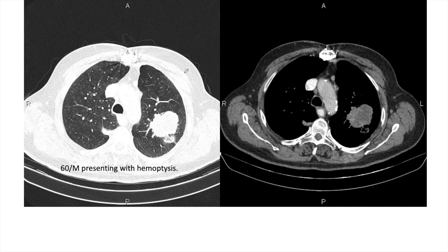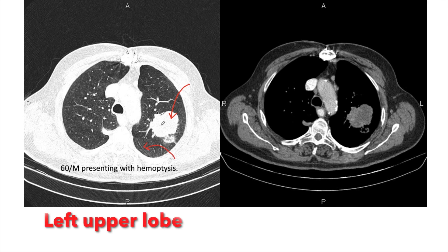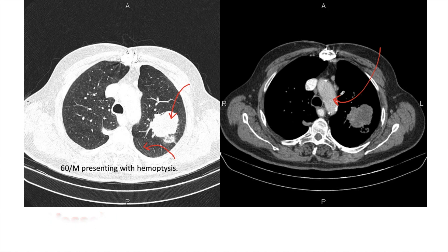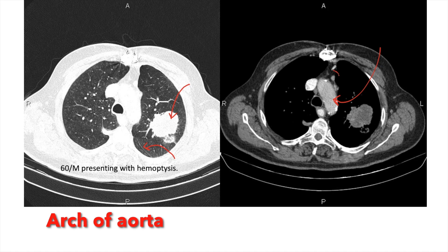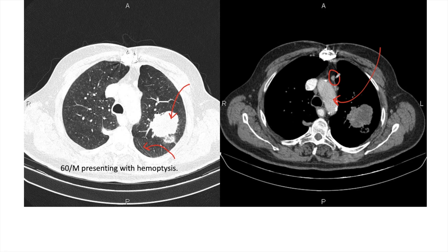Coming back to our original question: this mass is located anterior to the left major fissure, hence it is in the left upper lobe. The banana-shaped vessel adjacent to it is the arch of the aorta, and the structure adjacent to the arch is a lymph node — hence this is a para-aortic node. Thank you.